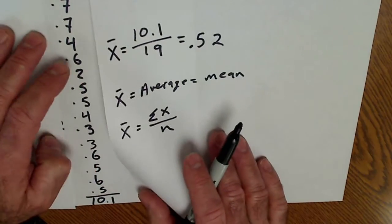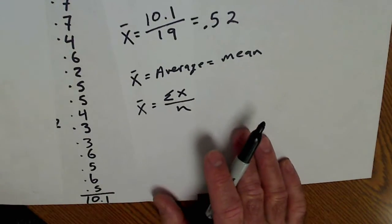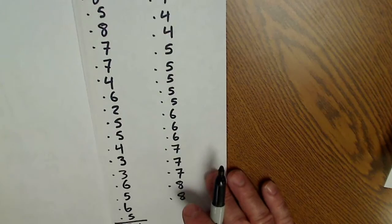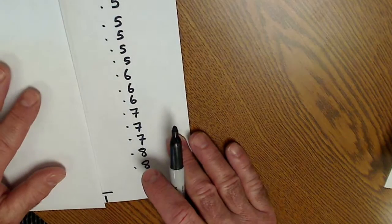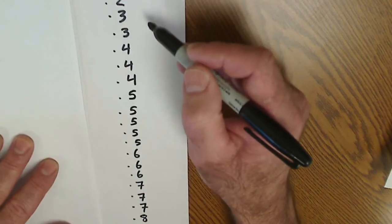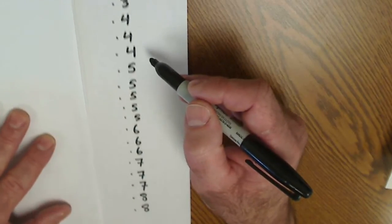The next stat we're going to look at is called median, and the median is the middle value. So I've taken all of these numbers here, and I put them down in order. So the smallest is up here, 0.2, to the largest, 0.8.